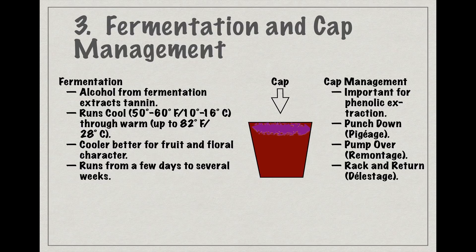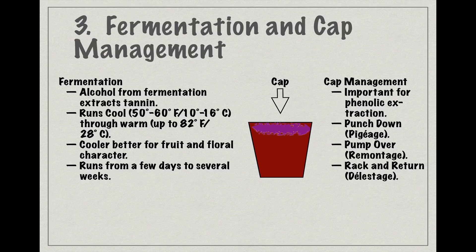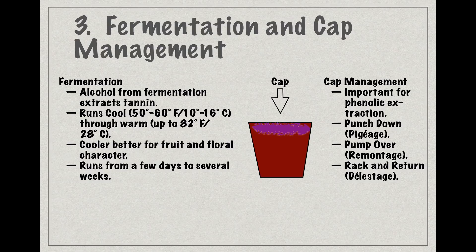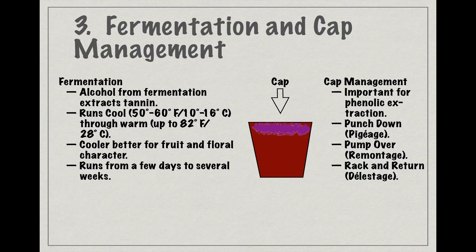She can elect to punch the cap back down into the wine on a regular basis to keep the skins and fermenting juice in contact, a technique also known by its French name, pigiage. This strategy is especially useful if the juice is fermenting in a simple vat or bin with no outlet on the bottom of the vessel to pump the juice over. If the fermentation vessel does have a means to pump the juice from under the cap back onto the top of the cap, this strategy called remontage in French can also be employed.